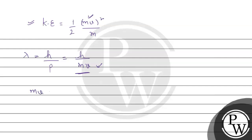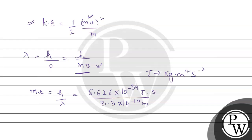So MV = h/λ. Planck's constant is 6.626 × 10⁻³⁴ J·s, divided by λ = 3.3 × 10⁻¹⁰ meter. Checking units: joules is kg·m²/s², divided by meter, multiplied by second — the meters cancel and per-second terms cancel, giving us kg·m/s, which is the unit of momentum (mass × velocity).